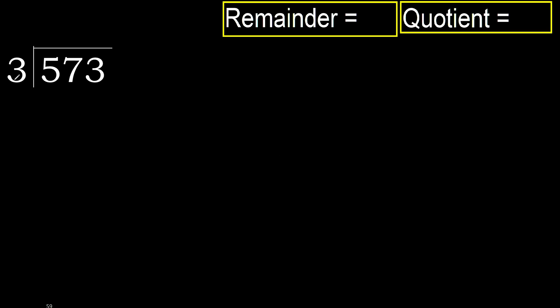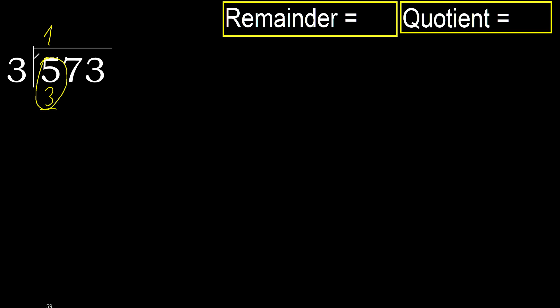573 divided by 3. 5 is not less, therefore start with 5 and 3. Multiply: which number is nearest to 5 but not greater? 3. Multiply by 2? That gives 6, which is greater. Multiply by 1? That gives 3, which is not greater. Subtract: 5 minus 3 equals 2. Next.